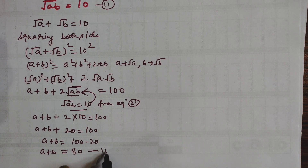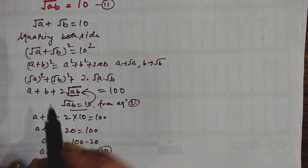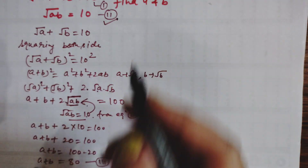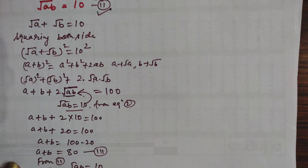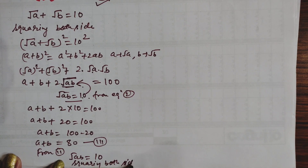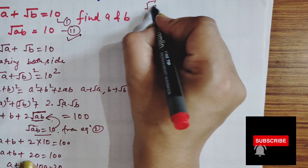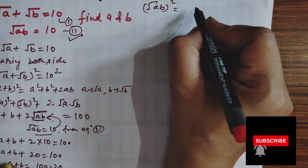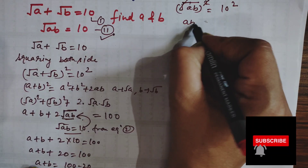We consider this as equation number 3: A + B = 80. Now, taking equation number 2 again, root of AB equals 10. Squaring both sides of this equation, root of AB squared gives AB, and the right side is 10 squared. So AB equals 100. This is equation number 4.